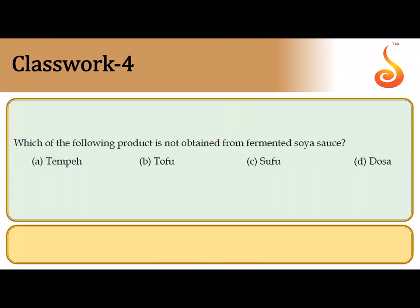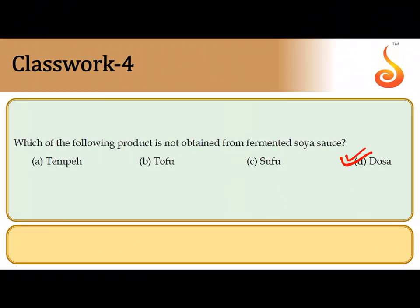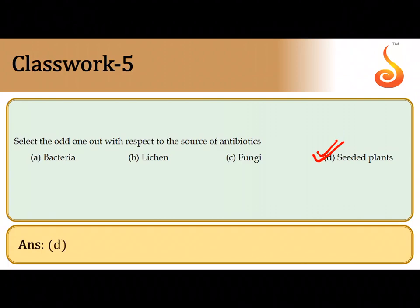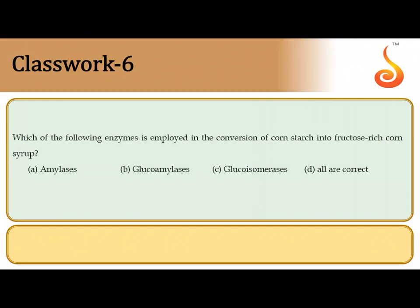The fourth question asks which product is not obtained from fermented soya sauce. Dosa is obviously not obtained from fermentation of soya sauce, so the correct answer is option D. The fifth question asks to select the odd one out with respect to sources of antibiotics. You get antibiotics from bacteria, lichen, and fungi, but we do not obtain antibiotics from seeded plants or angiosperms, so the odd one out is the last option.